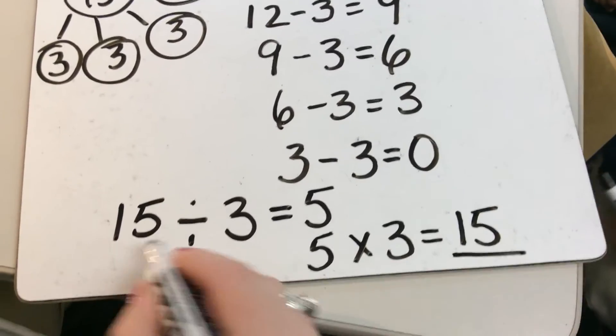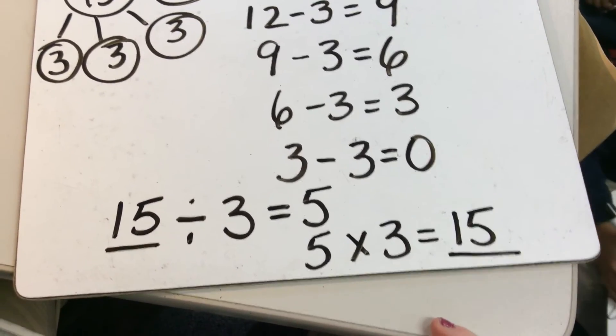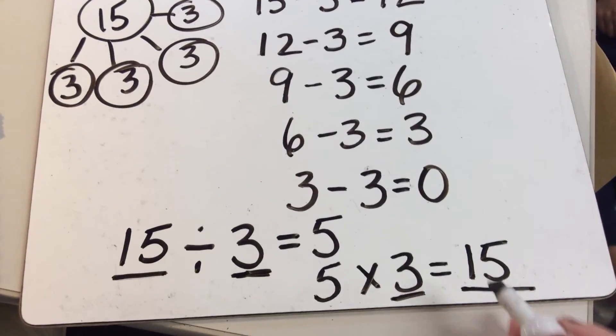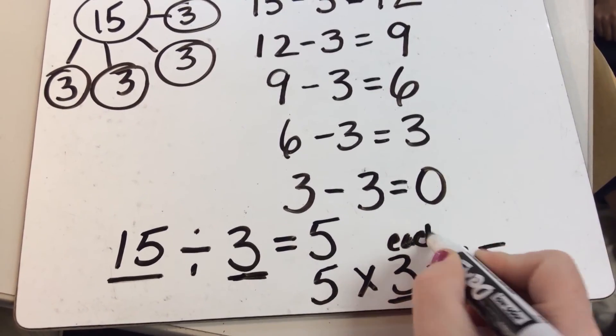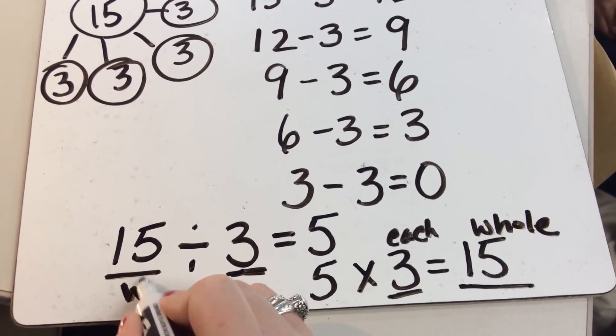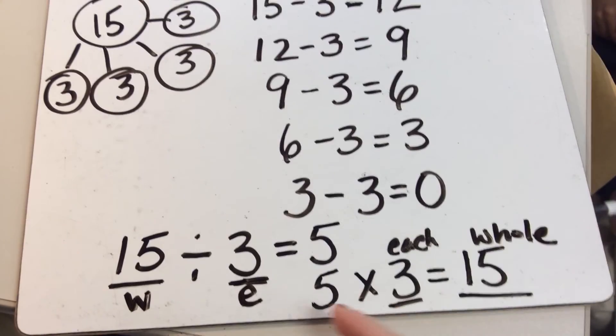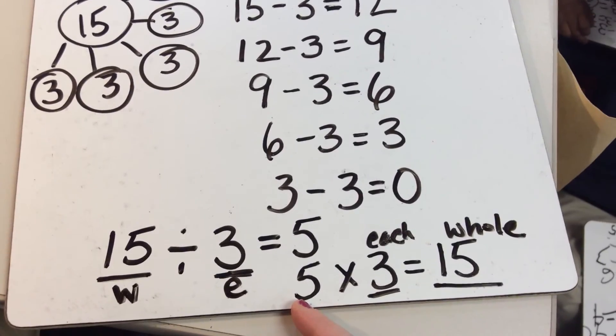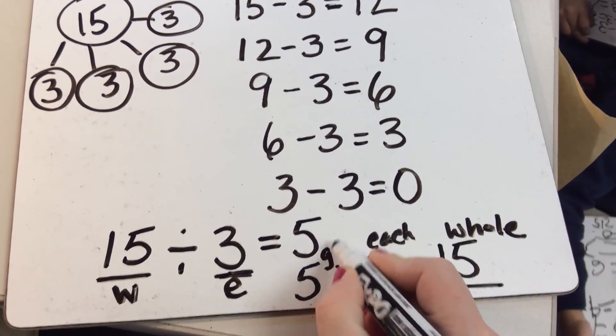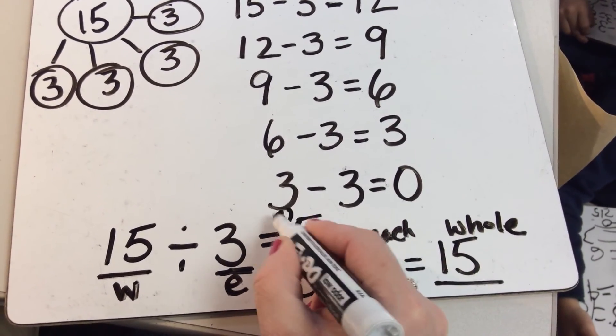Now, there's our whole. And then, each one had 3. So, this was in each. And this was our whole. And over here, I'm just going to do an abbreviation. Whole. In each. And then, how many groups? How many groups did we make, guys? 5.